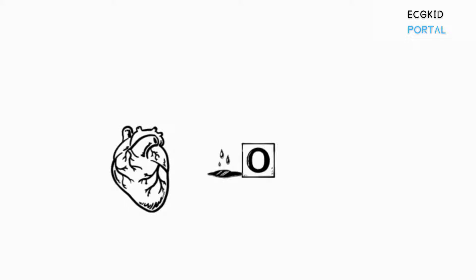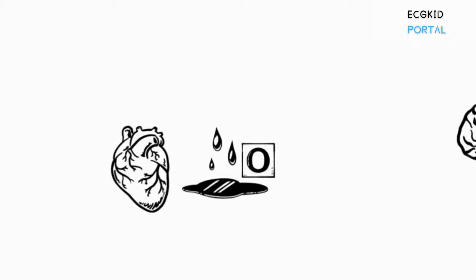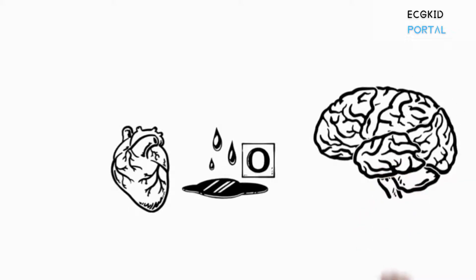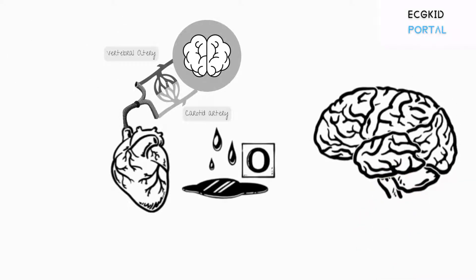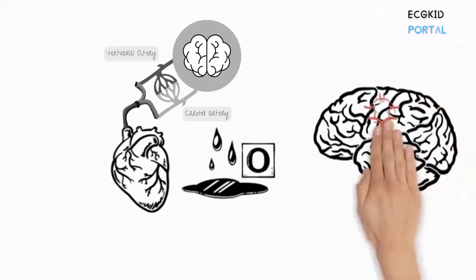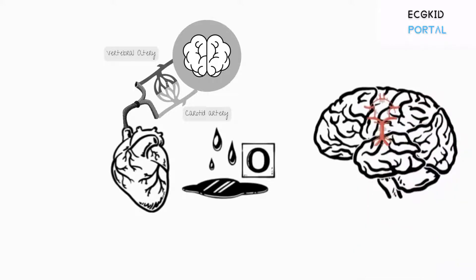This oxygen is provided by the heart, by pumping enough blood into the brain through a network. The carotid arteries, which supply the front of the brain, and vertebral arteries, which supply the back, form a connection in the brain through multiple small vessels called the Circle of Willis.